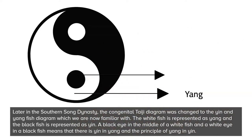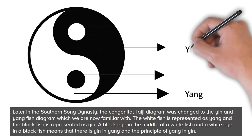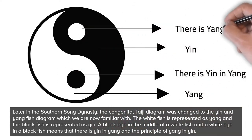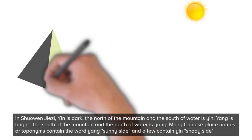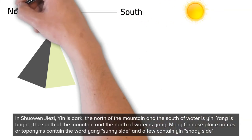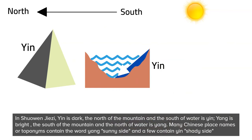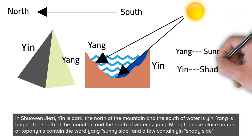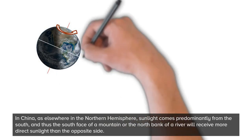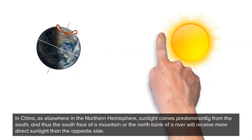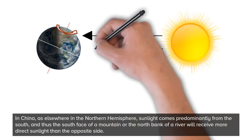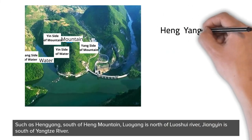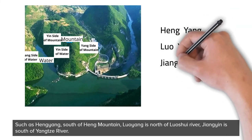The white fish represents yang and the black fish represents yin. A black eye in the middle of the white fish and a white eye in the black fish means there is yin within yang and yang within yin. In Shuowen Jiezi, yin is defined as dark — the north of a mountain and the south of water is yin. Yang is bright — the south of a mountain and the north of water is yang. Many Chinese place names contain the word yang (sunny side), and a few contain yin (shady side). For example, Hengyang is south of Heng Mountain, Luoyang is north of the Luo River, and Jiangyin is south of the Yangtze River.